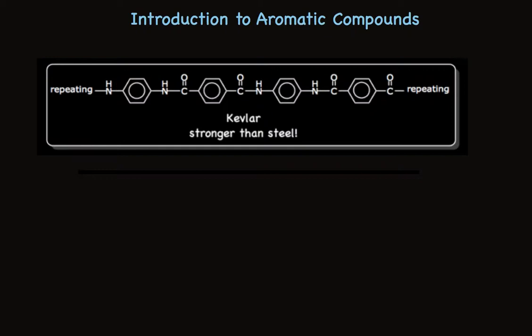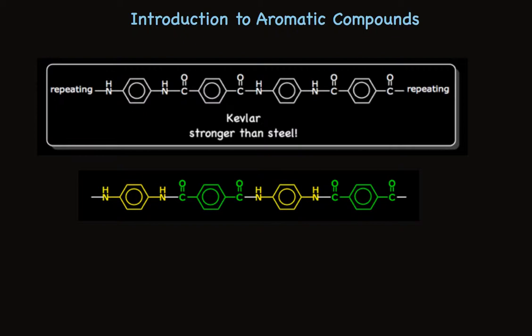One last structure I want to show you is Kevlar. This is a long-chain polymer. Lots of aromatic rings hooked together with other functional groups. Kevlar is stronger than steel. It's used to make bulletproof vests that are light enough to wear comfortably, widely used on the battlefield. It's used to make protective helmets like motorcycle helmets. And it's used to make cables that are much stronger than steel cables. Remarkable. Looking at this structure might be enough to make you go cross-eyed. But when you break it down into its components, it's not so complicated.